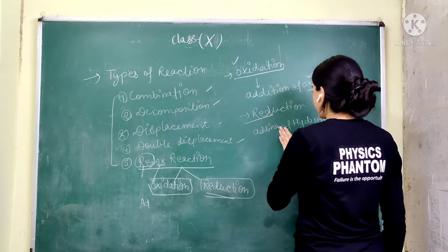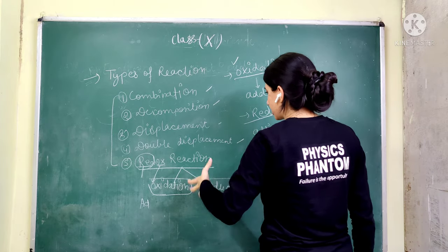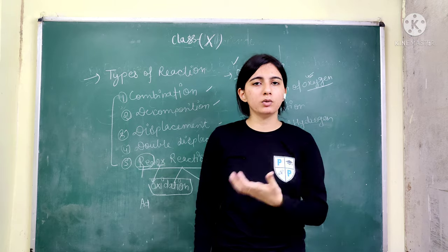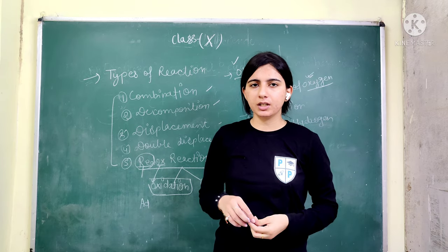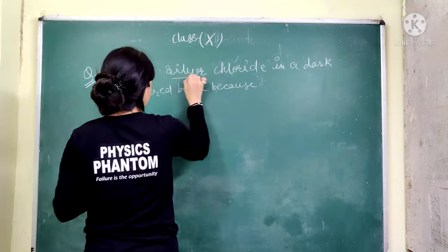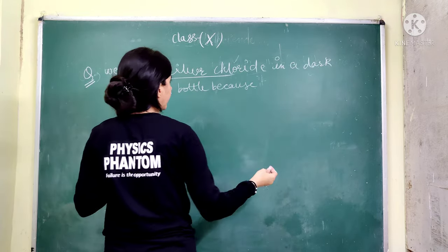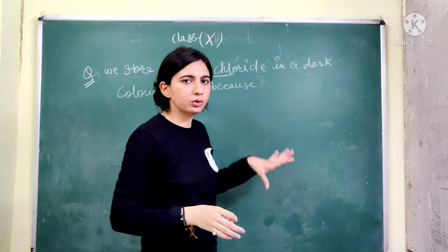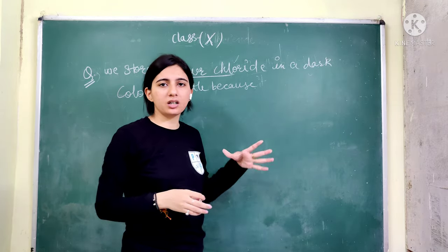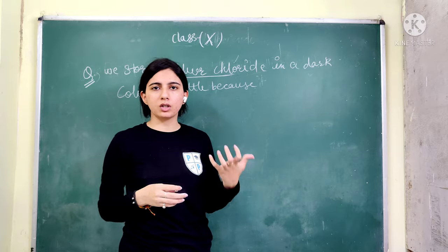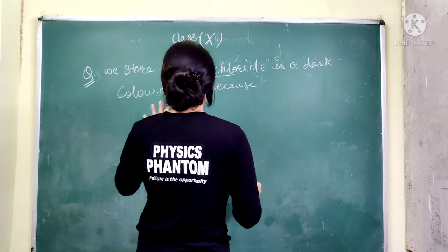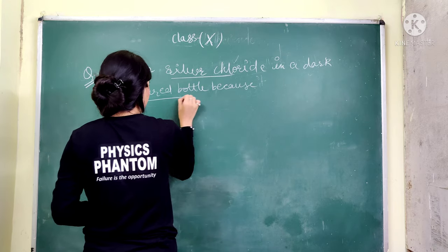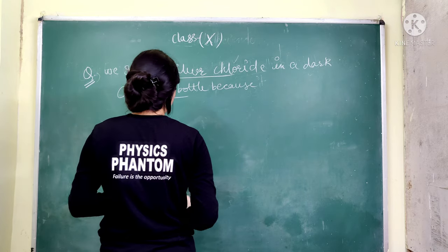I hope the definitions of oxidation and reduction are understood. If there is any doubt, please comment and I will clear it. The next question is: why is silver chloride kept in dark-colored bottles? It will be understood that some reaction is involved, and I will explain what type of reaction happens.